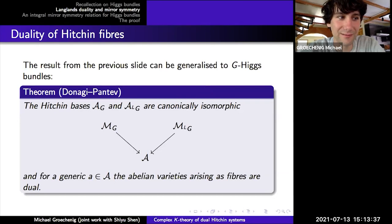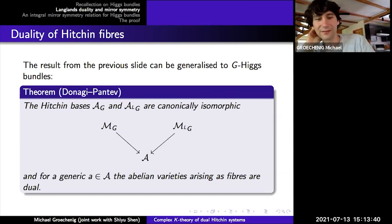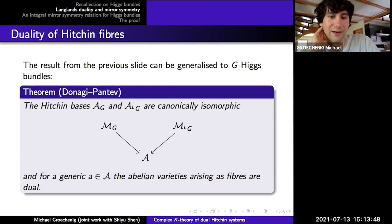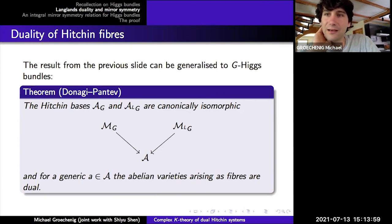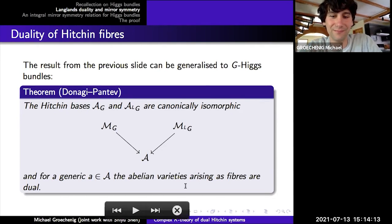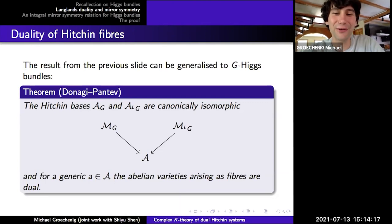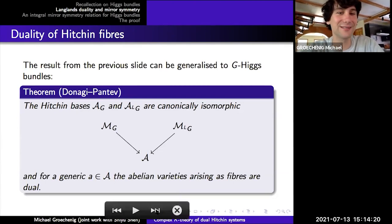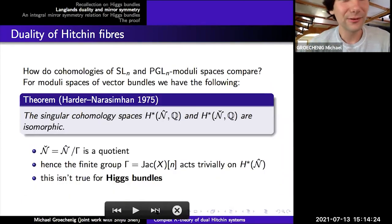For singular fibers, there is a result by Arinkin that works for GL_n, SL_n, and PGL_n, extending the duality to a derived equivalence over the elliptic locus where spectral curves are integral. There are also extensions to non-reduced spectral curves. In general one would expect this to hold everywhere, but that remains open.